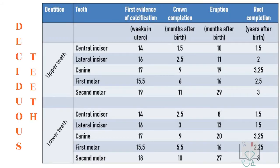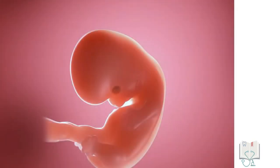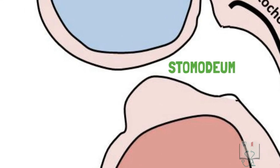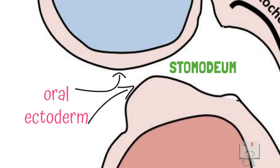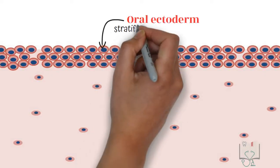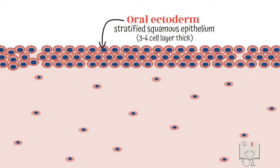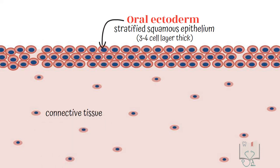In the chronology of deciduous teeth, we have read that their development begins in utero, that is in the embryo stage. In the embryo at about six weeks of age, the stomodium or the primitive oral cavity, which will form the oral cavity in future, is lined by oral ectoderm. This oral ectoderm is a stratified squamous epithelium of three to four cell layer thickness with connective tissue beneath.